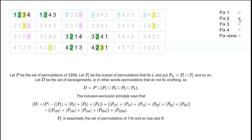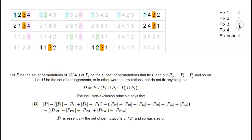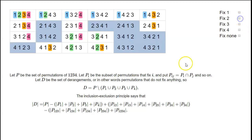P2 is the permutations that send 2 to itself. There are 6 such permutations. Similarly there are 6 permutations that send 3 to 3, and 6 permutations that send 4 to 4. So all these sets P_i have size 6. That's easy to see: if we want permutations that fix 3, they just have to permute 1, 2, and 4 in any way. Because there are 3 things in that list, there are 3 factorial = 6 ways to permute them.